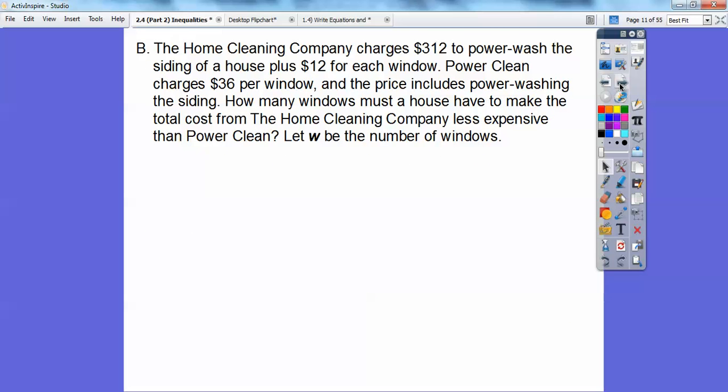The home cleaning company charges $312 to power wash the siding of a house plus $12 for each window. Power Clean charges just $36 a window, and that price includes the power washing of the sides. How many windows must a house have to make the total cost of the home cleaning company less expensive? We'll let W be the number of windows. So this is 312 plus 12W, and this is 36W.